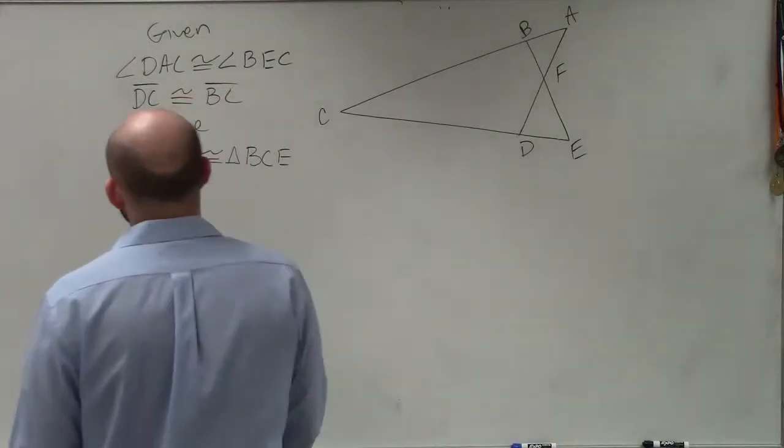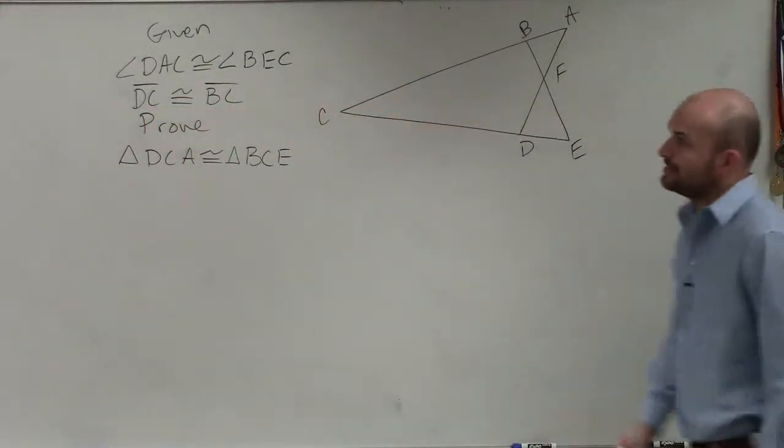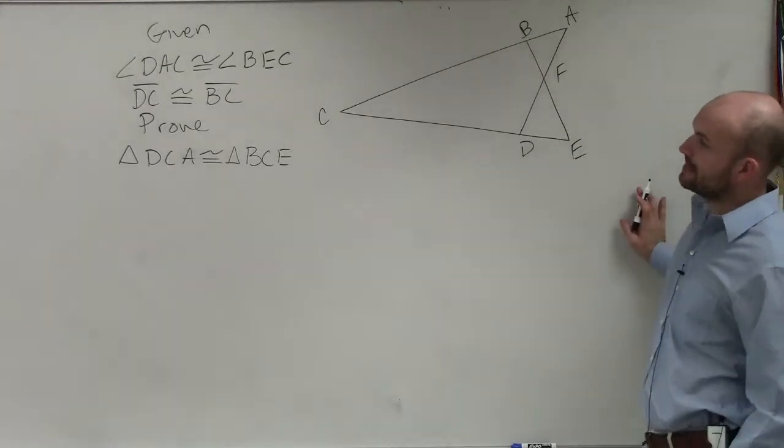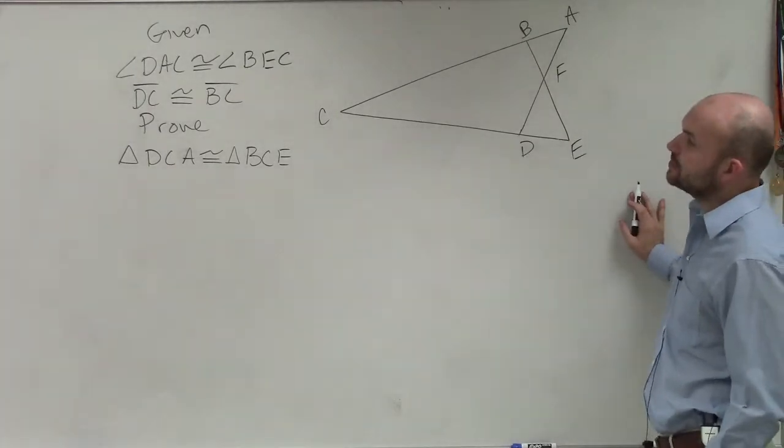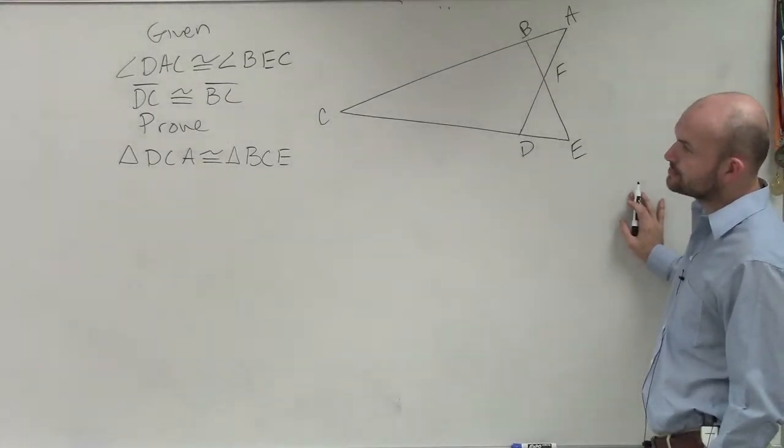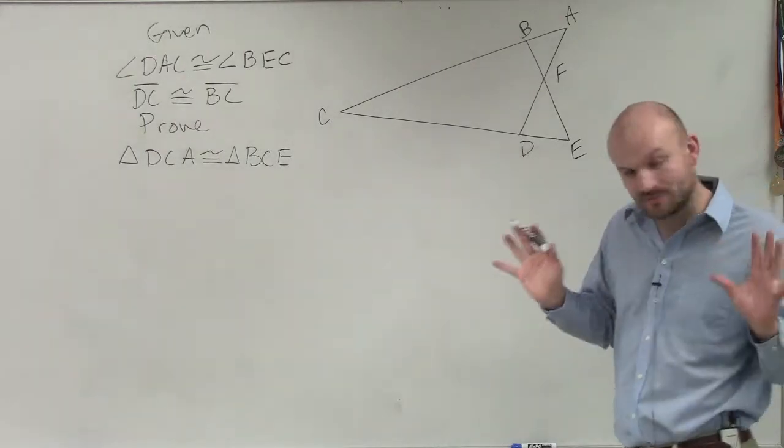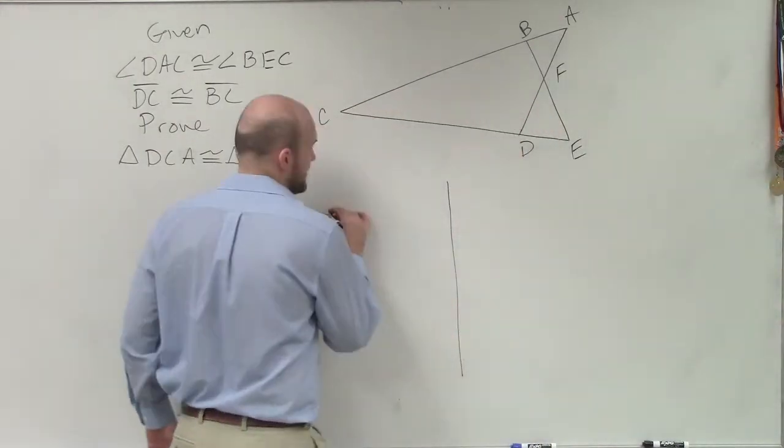So in this case, ladies and gentlemen, we have given angle DAC is congruent to angle BEC, and also line DC is congruent to BC. So again, step number one, let's write down our given information.